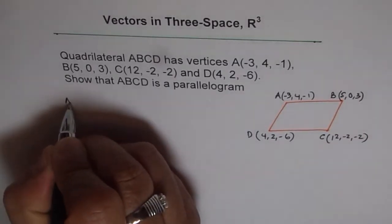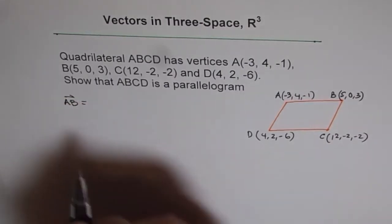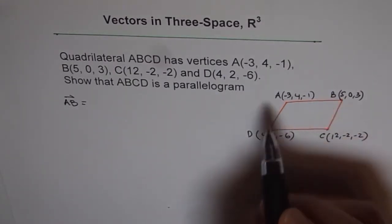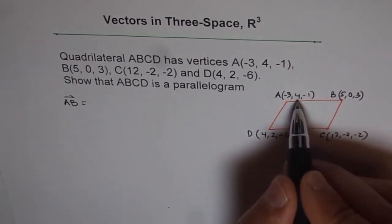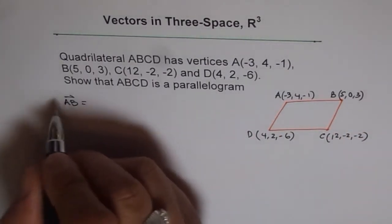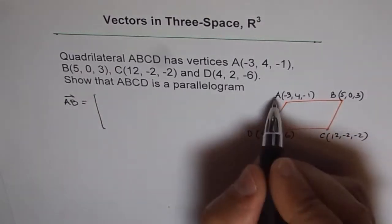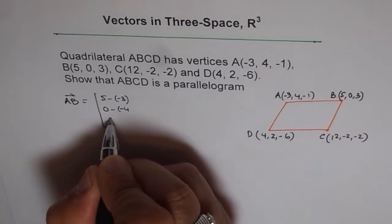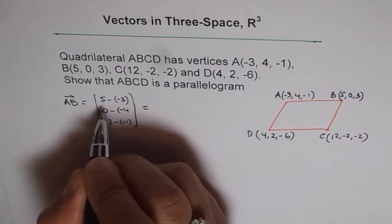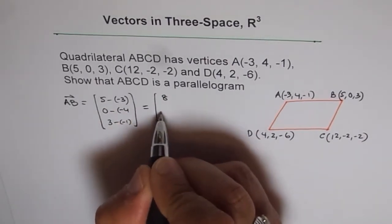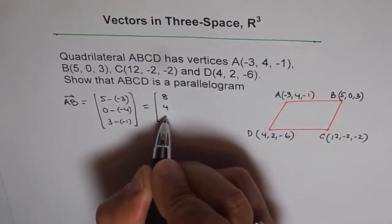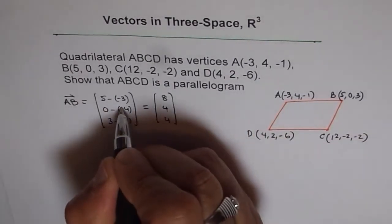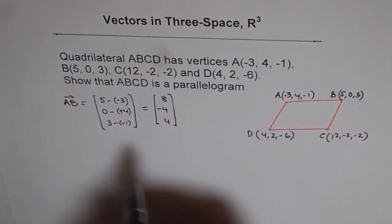Let's figure out what is AB. We'll use matrix to find AB. We'll subtract all respective direction numbers from B to A. AB is 5 minus (-3), 0 minus 4, and 3 minus (-1). That gives us 8, -4, and 4. So that is AB for us.